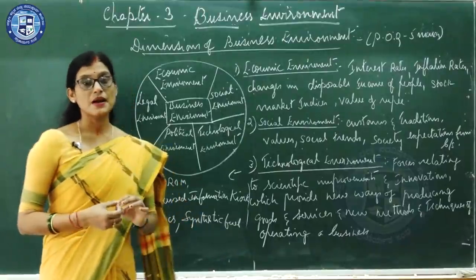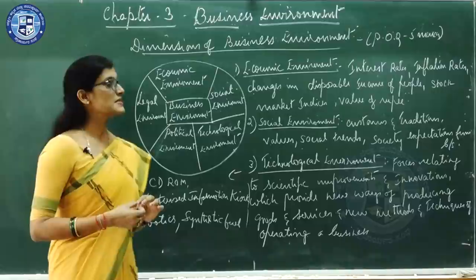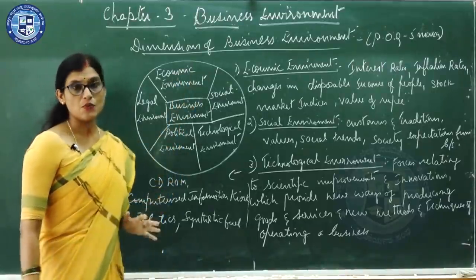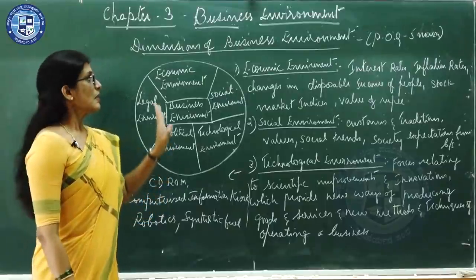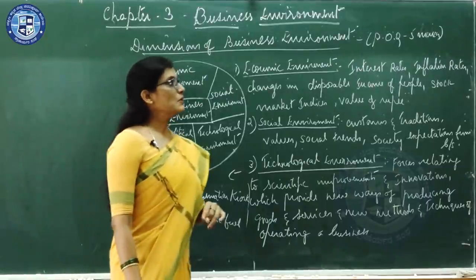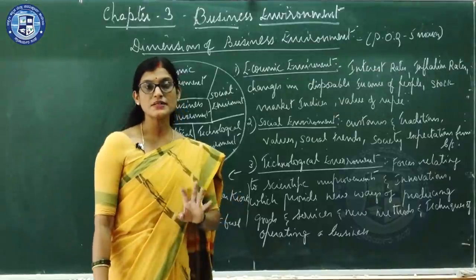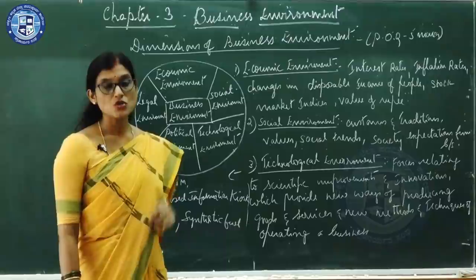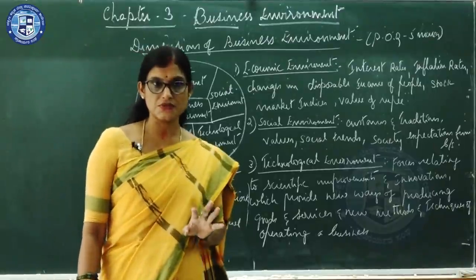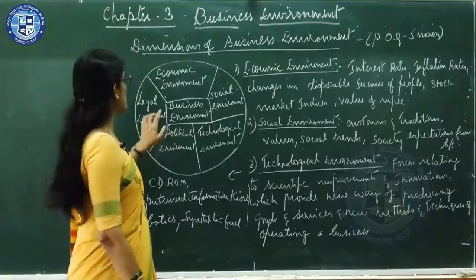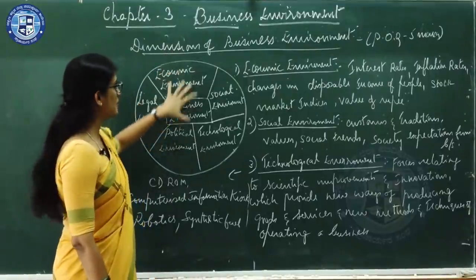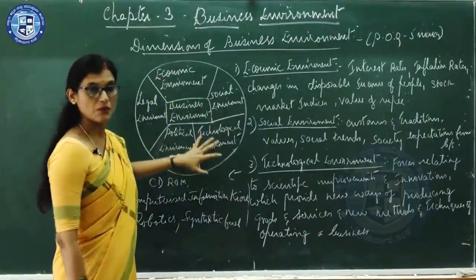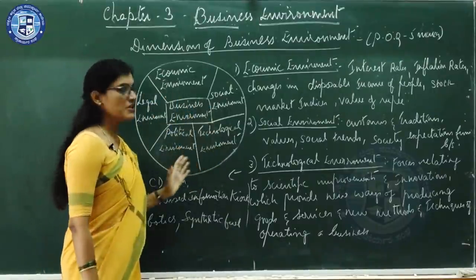Next we will be dealing with dimensions of business environment. Dimensions of business environment is usually asked as a practical oriented question for five marks - neatly draw the diagram showing the different dimensions of business environment. These are the general forces which I have already explained. That is economic environment - this dimension of business environment is shown as a full circle with all the dimensions shown.